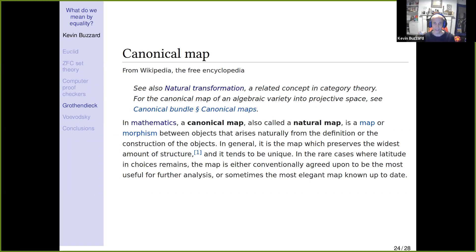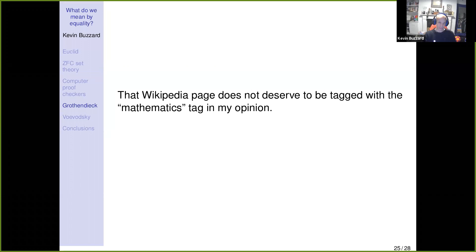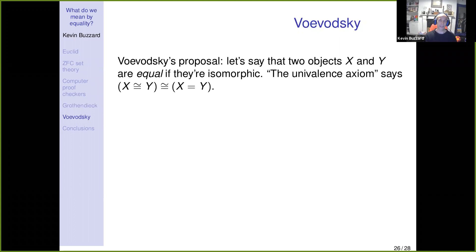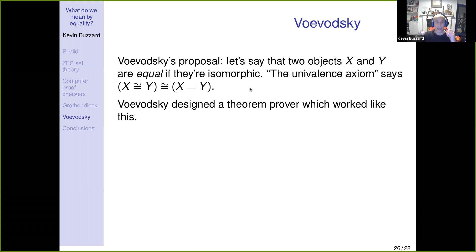Wrapping up: Voevodsky's proposal. Why not forget about canonical isomorphism, since we don't really know what it means, but we do know what isomorphism means? Let's say two objects are equal if they're isomorphic — a really quite radical idea. The univalence axiom says the set of isomorphisms between x and y is isomorphic to the set of proofs of 'x equals y.' Voevodsky designed a theorem prover which worked like this, and in my opinion there's a big issue here.